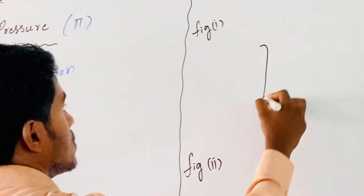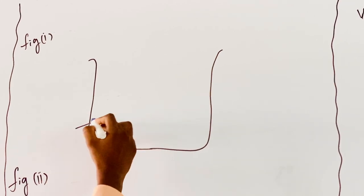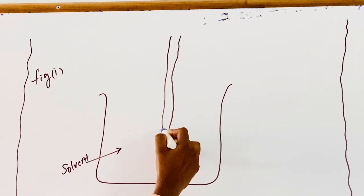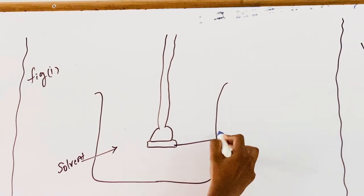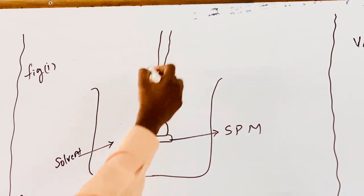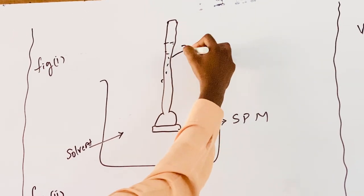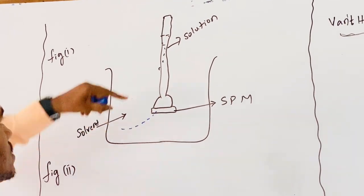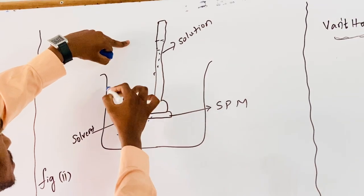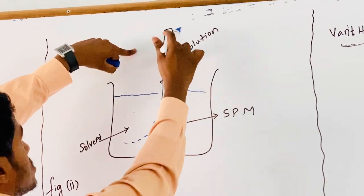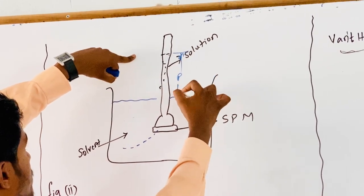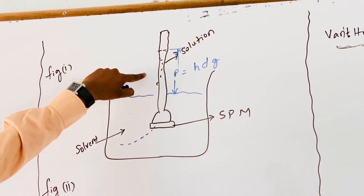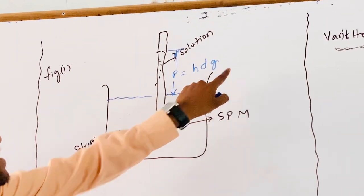For the experimental representation, take a beaker with some quantity of solvent and insert a thistle funnel fitted with a semi-permeable membrane. The thistle funnel is filled with a solution of high concentration. The solvent molecules pass into the solution through the semi-permeable membrane. The difference in the level of water and the solution in the thistle funnel represents the osmotic pressure P, given as H × D × G, where H is the height of the solution, D is the density of the solution, and G is acceleration due to gravity.